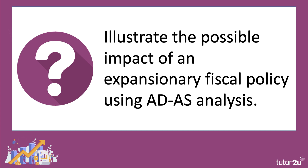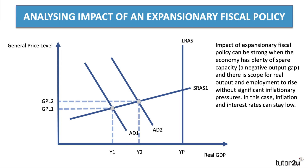You can also use AD/AS analysis to help you. An expansionary fiscal policy — an increase in government spending or a cut in tax — can have a strong impact when the economy has plenty of spare capacity. In other words, where actual GDP (Y1 initially) is well below the potential level of national output, and there's plenty of scope for demand, output, and jobs to rise without causing inflation. And if inflation stays low, then central bank interest rates can also possibly stay low as well.